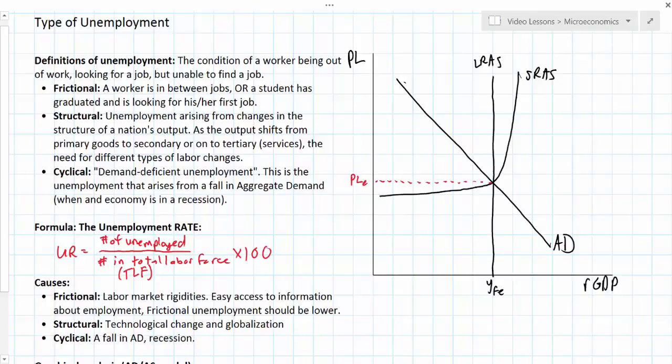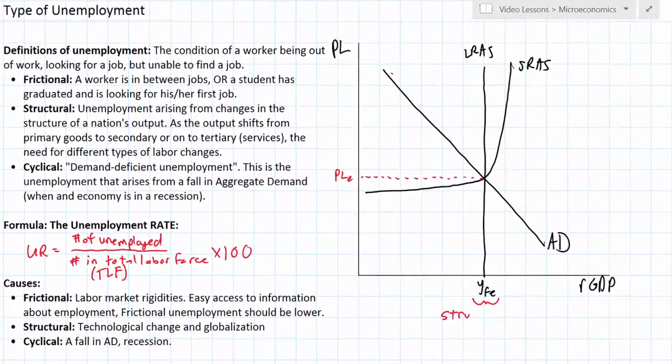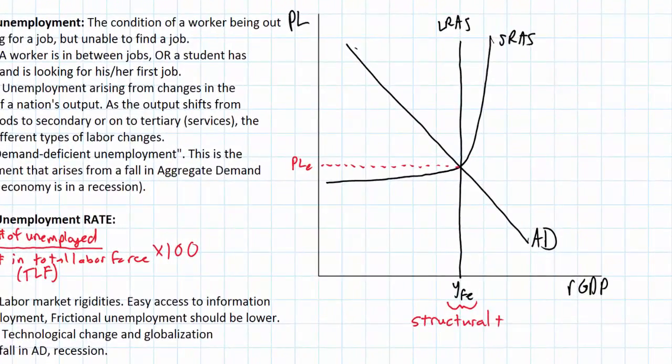So let's talk about the level of unemployment that exists when a nation is at full employment. When a nation is at full employment it is experiencing structural plus frictional unemployment. These together represent what we call the natural types of unemployment. Even a healthy economy producing at its full employment level is expected to have some natural unemployment.